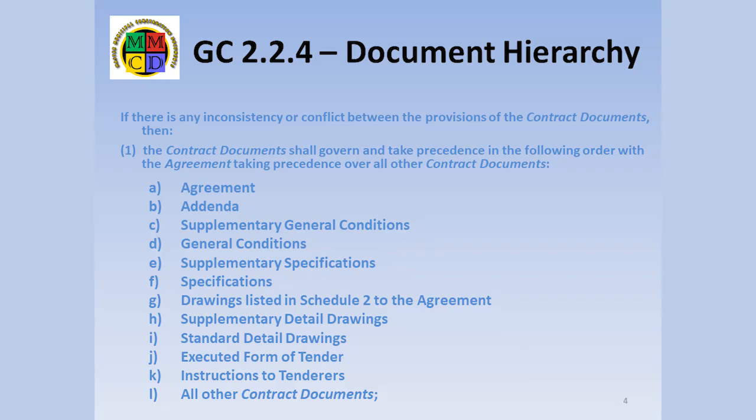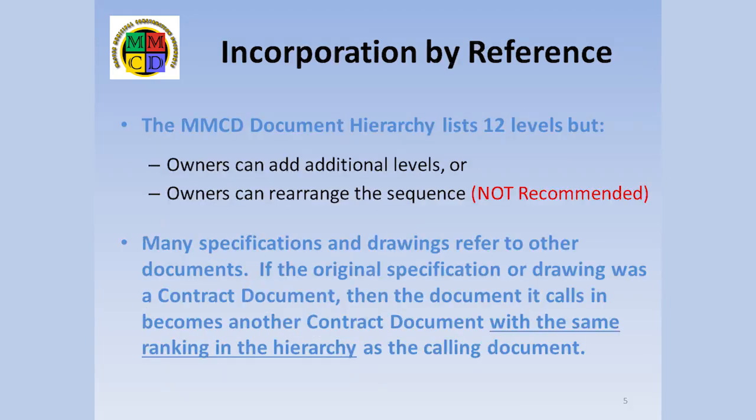Tender document preparers, owners, contract administrators, and contractors, including their superintendents, must know this hierarchy, or at least that it exists and where to find it. As with all general conditions, owners have the ability to modify this clause to change the order or add or delete items. With one exception that I'll discuss later, the Association does not recommend modifying the standard document hierarchy.